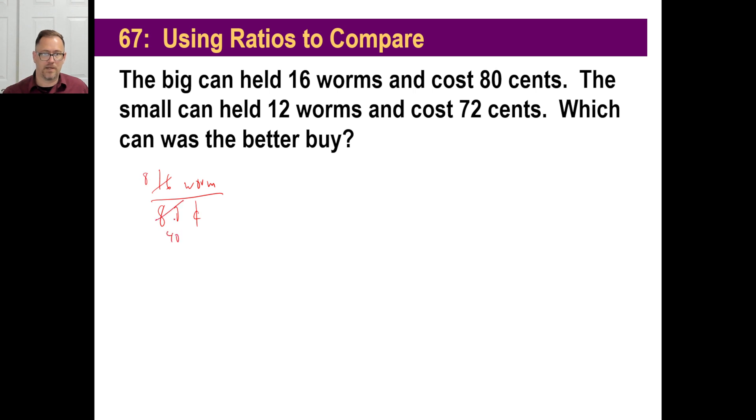That's 8 and then 40. You ought to recognize at this point that 8 into 40 is 1. So one worm, and that's going to be 5 cents. So in other words, it's a nickel, a worm.